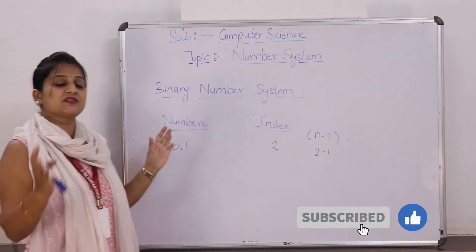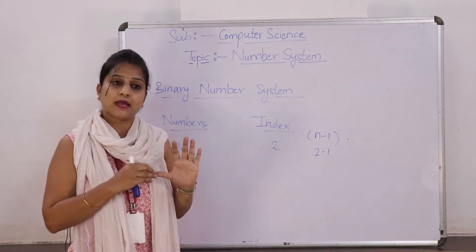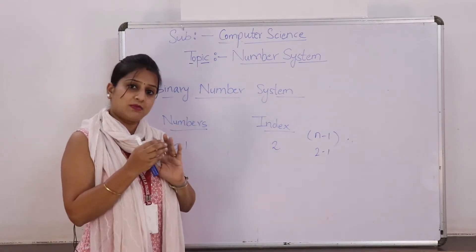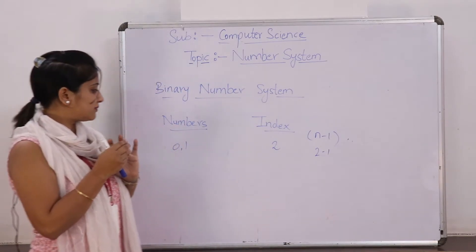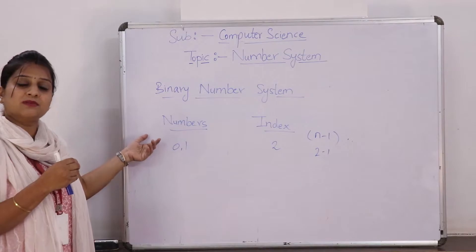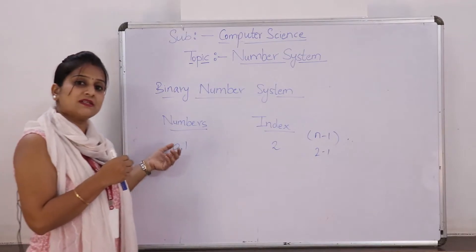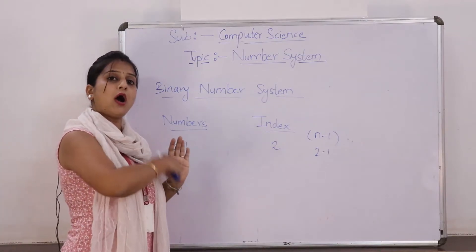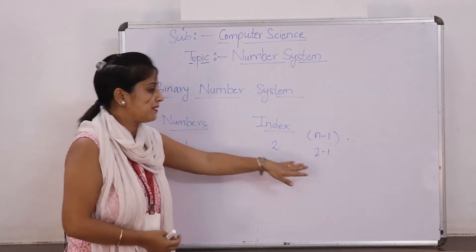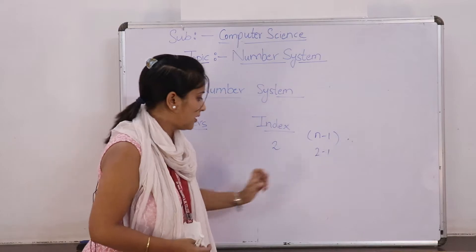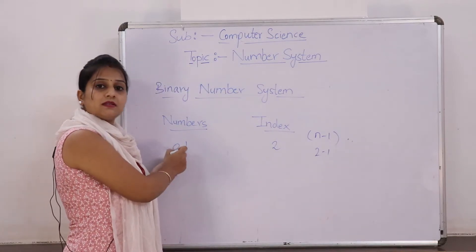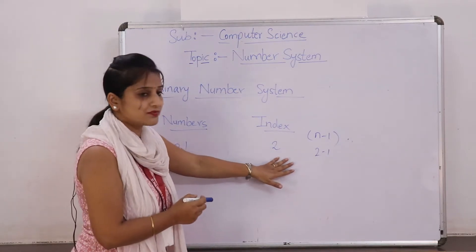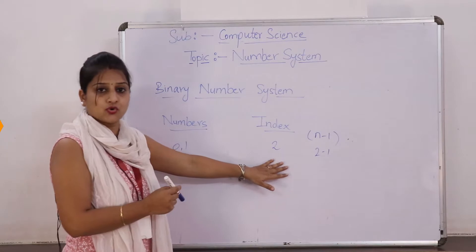In any number system — whether it is binary, octal, decimal, or hexadecimal — the value will always start from 0 and go up to n-1. For binary, the digits are 0 and 1, and the index value is 2.